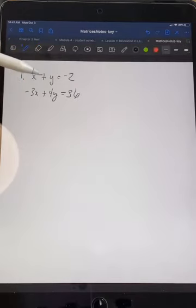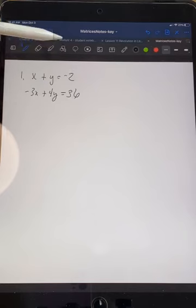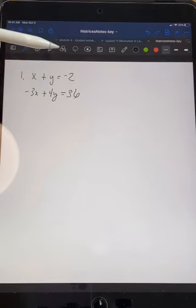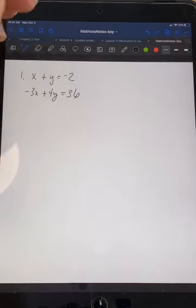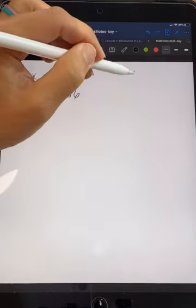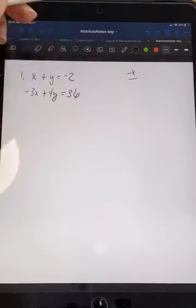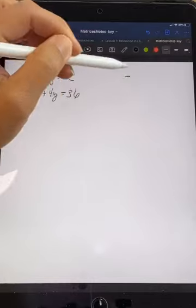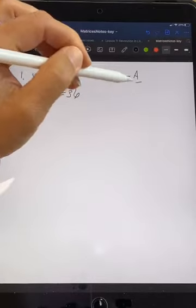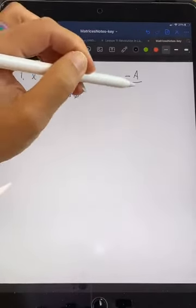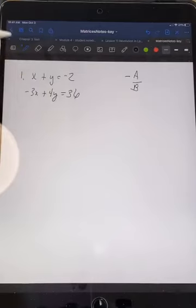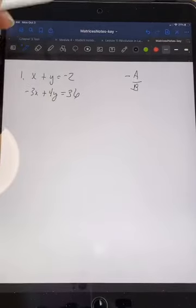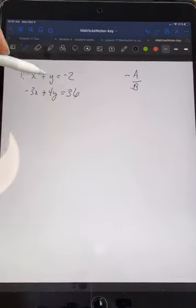So that's what we're looking at on these first ones. Here we need to put our equations into y equals mx plus b to be able to look at the slope. Or we can also use the shortcut where slope is negative the coefficient of x, which we call a, over the coefficient of y, which would be b.